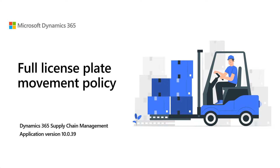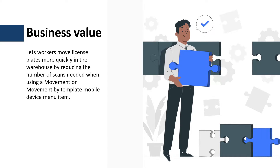Welcome. In this tutorial we will review how to manage the full license plate movement policy in Dynamics 365 Supply Chain Management. This feature has been released in application version 10.0.39 and it's enabled by default as part of the movement and movement by template menu item configuration. By using this feature, warehouse workers can move the license plate more quickly in the warehouse by reducing the number of scans needed when using the movement or movement by template flow.